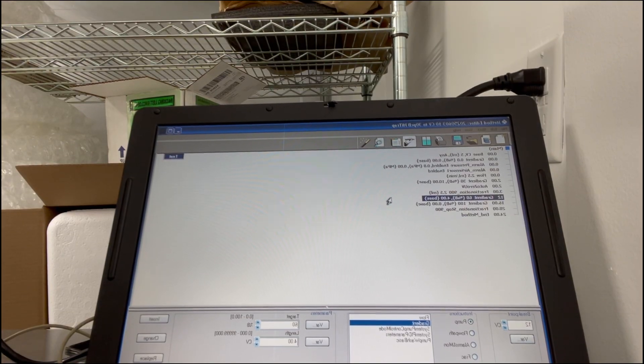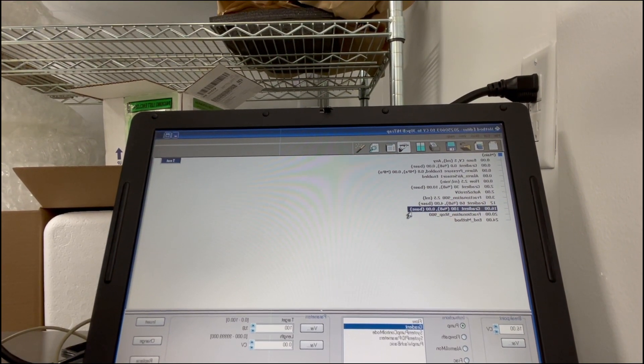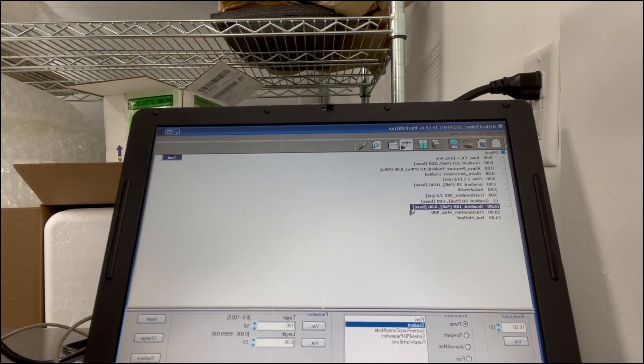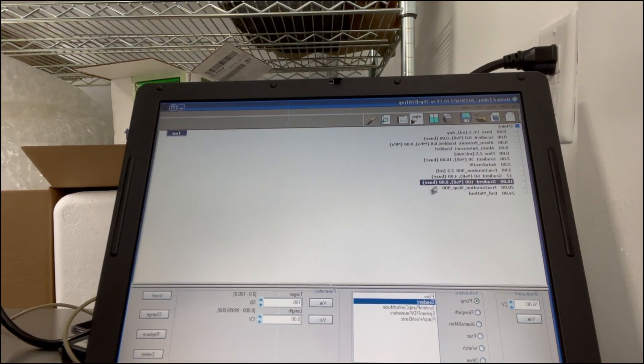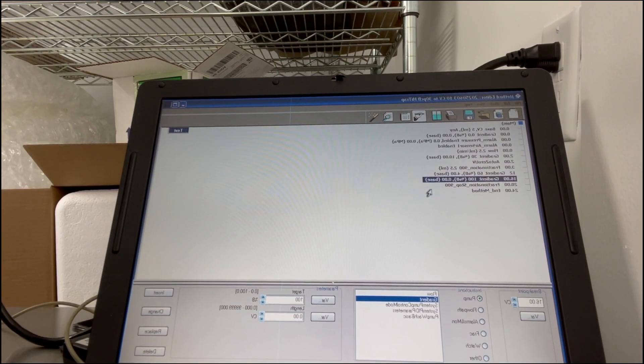That is to elute DNA. And then finally there was a gradient immediately to 100% B and that's because I want to store the column in buffer B. And once this method is done the column is going to be ready to store back in the fridge.